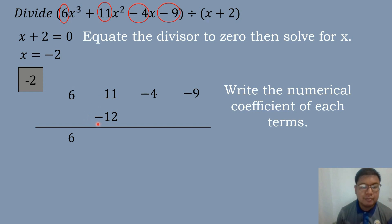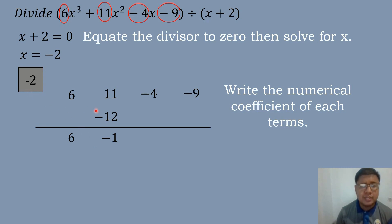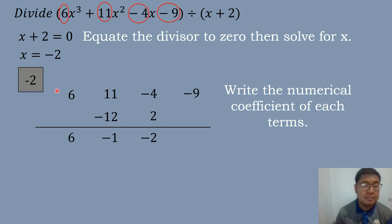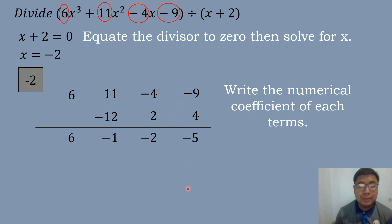So 11 plus negative 12 equals negative 1. Then we multiply negative 1 times negative 2, which equals positive 2, and negative 4 plus 2 equals negative 2. Then again we multiply negative 2 times negative 2, which equals positive 4, and we add negative 9 plus 4 which equals negative 5.